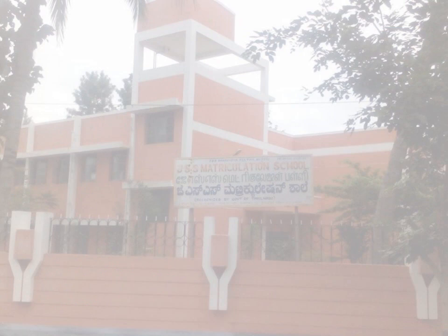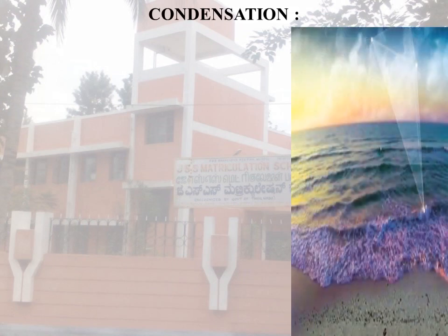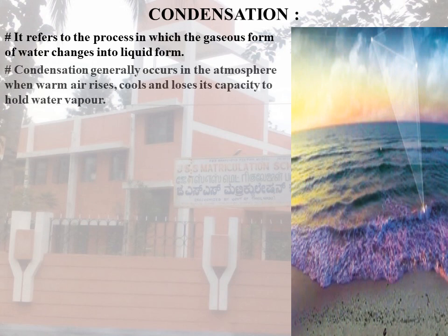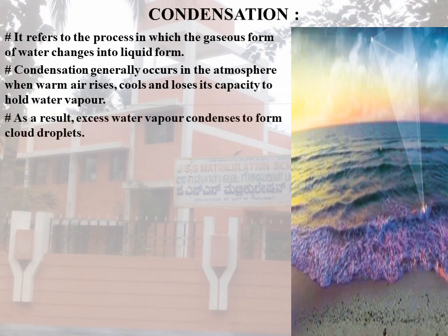The next component of the hydrological cycle is condensation. It refers to the process in which the gaseous form of water changes into liquid form. Condensation generally occurs in the atmosphere when warm air rises, cools, and loses its capacity to hold water vapor. As a result, excess water vapor condenses to form cloud droplets. Condensation is responsible for the formation of clouds, which produce precipitation — the primary route for water to return to the earth's surface in the water cycle. Condensation is the opposite of evaporation.